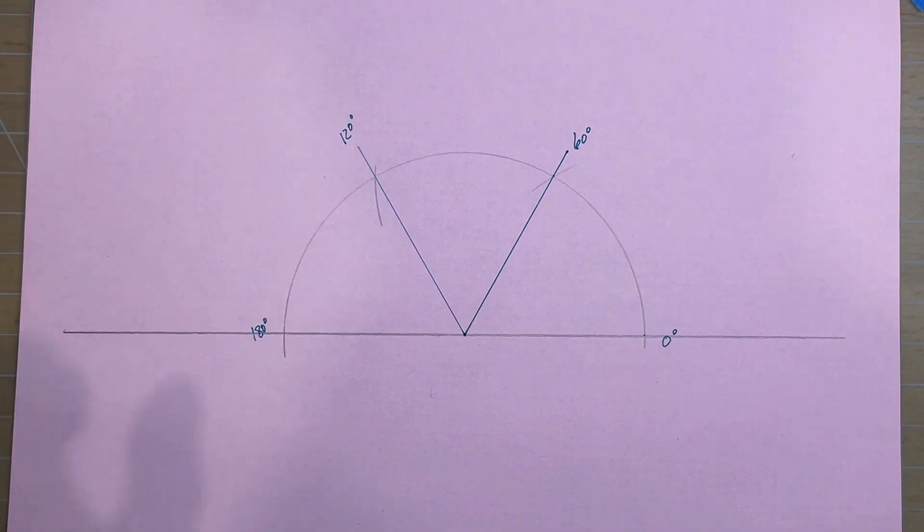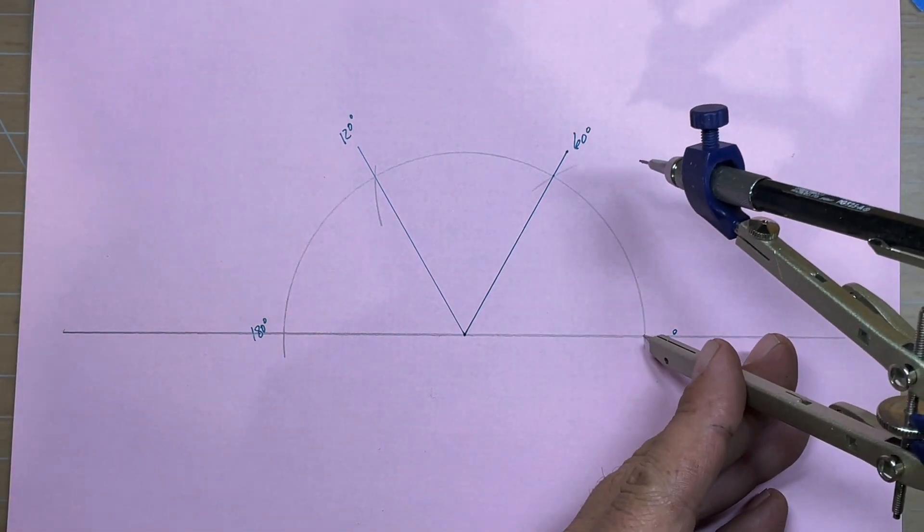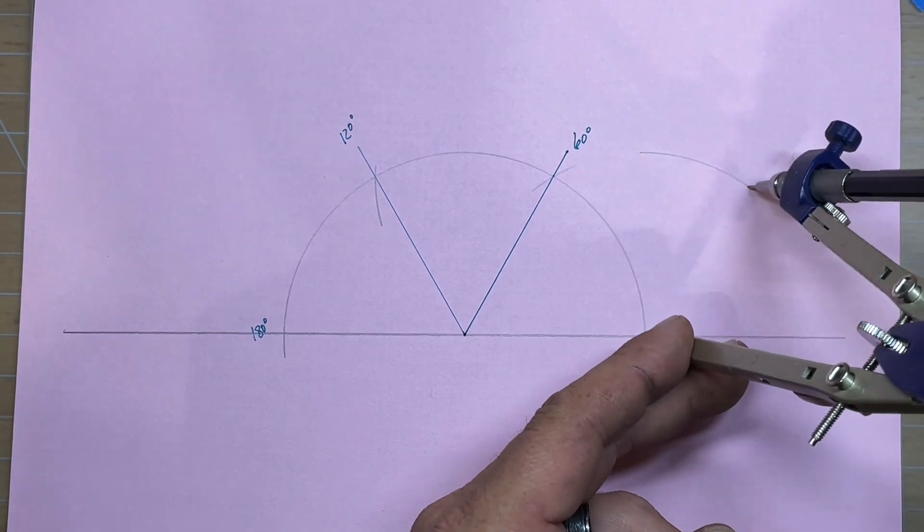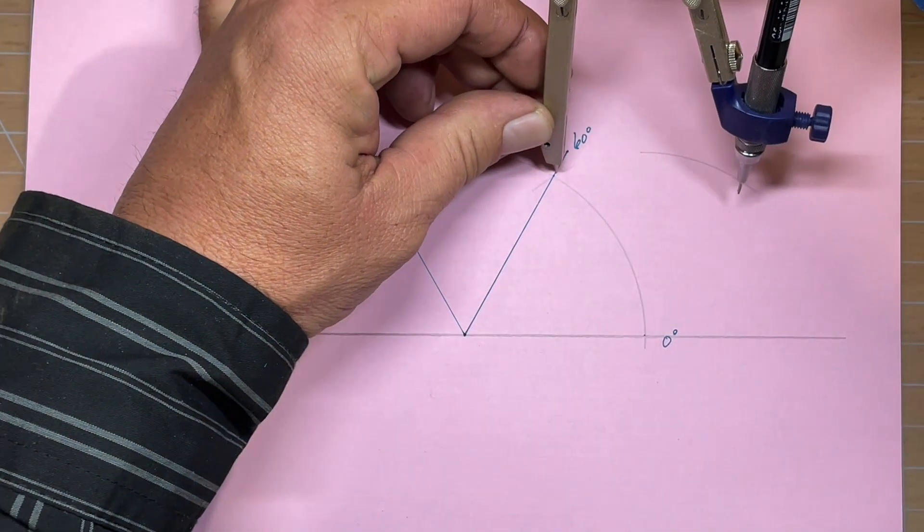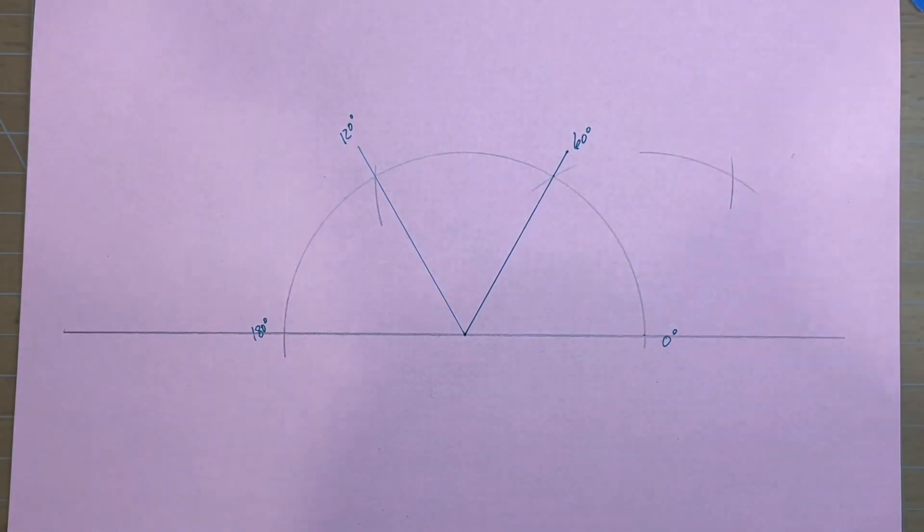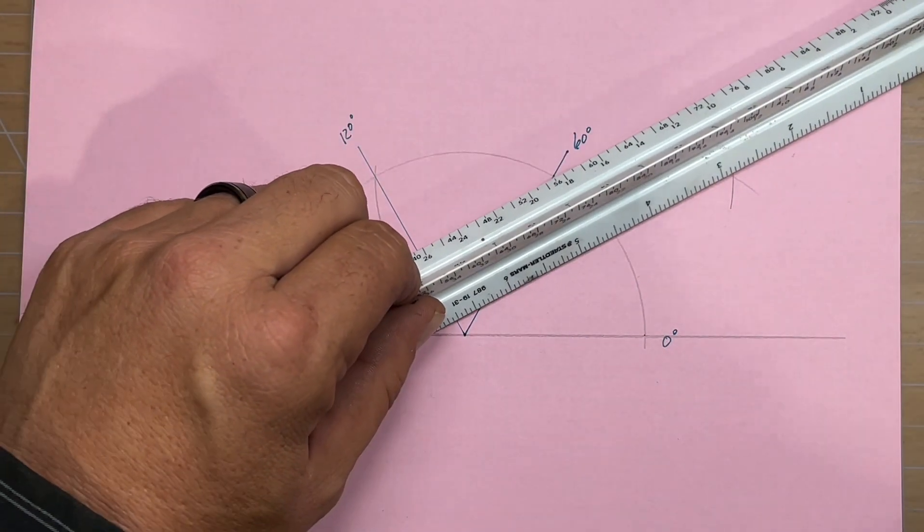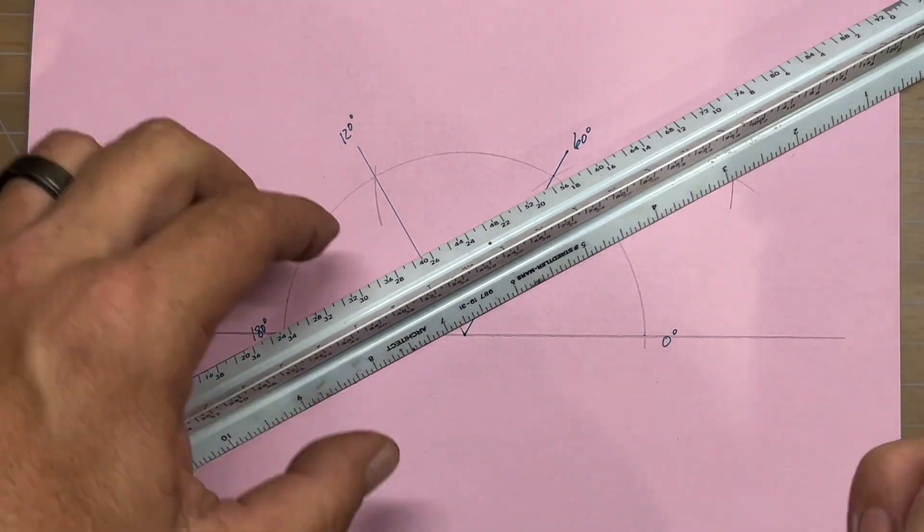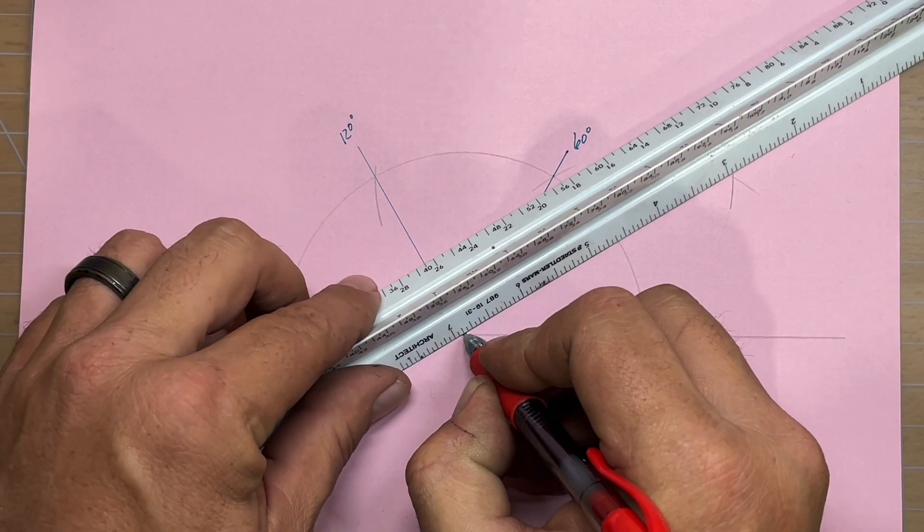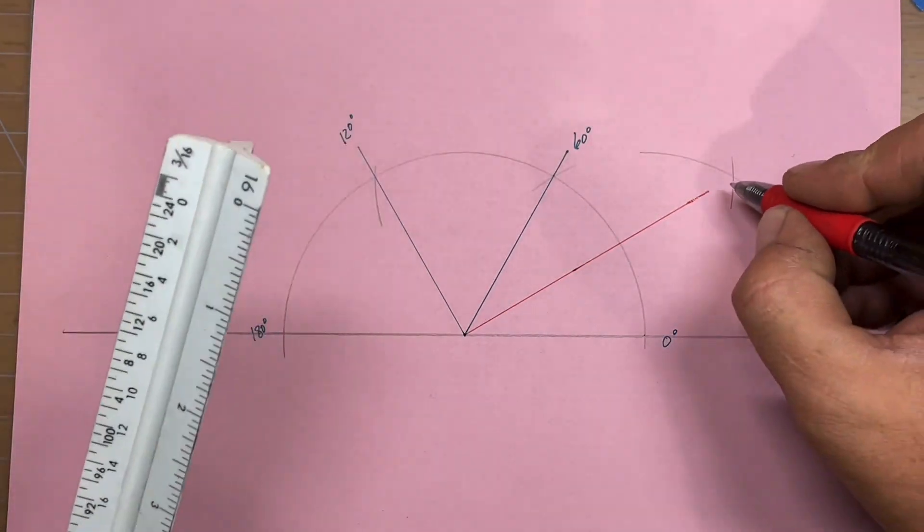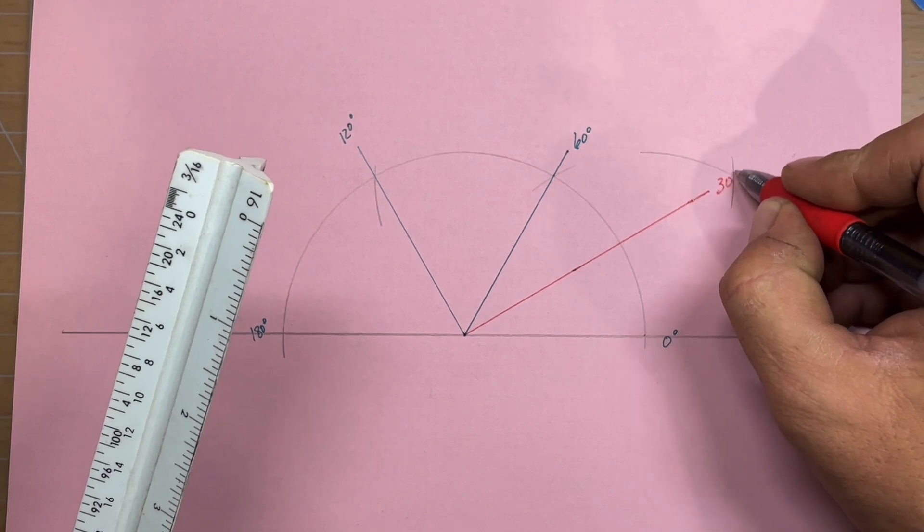Now from there, we can bisect this 60 degree angle by striking an arc here, then moving over, resetting our compass to this point, and striking an arc here. This will pick up our 30 degree angle, or half of 60. So let me grab a different color here, we'll set that and draw our arc, and this will be 30 degrees.